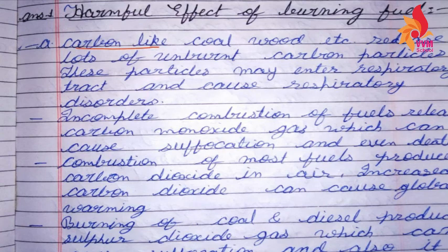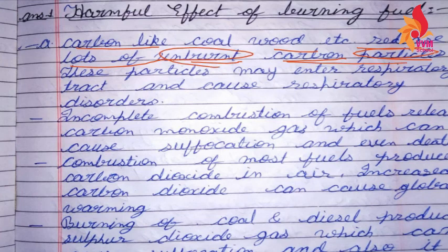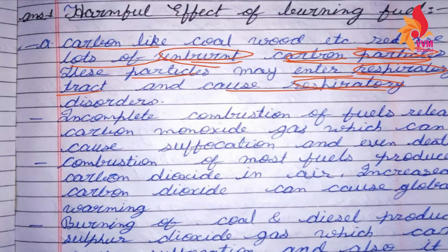Carbon-like coal, when burned, releases lots of unburned carbon particles. These particles enter the respiratory tract and cause respiratory disorders. The particles are included in the air, and when you breathe, they enter your respiratory tract and cause various disorders.